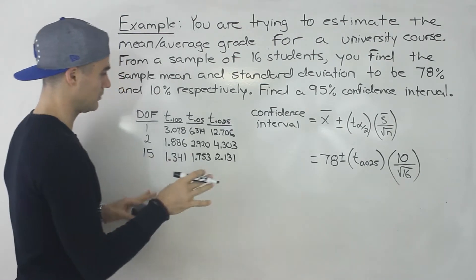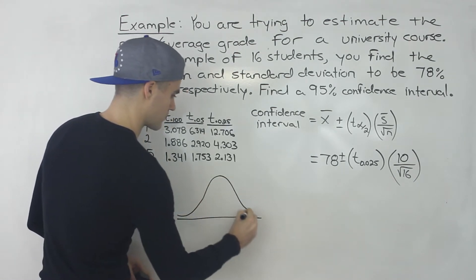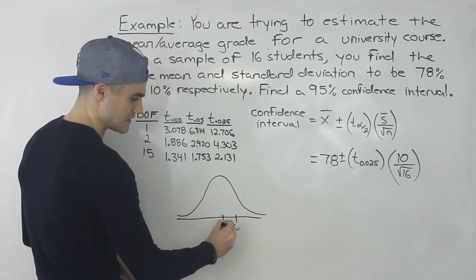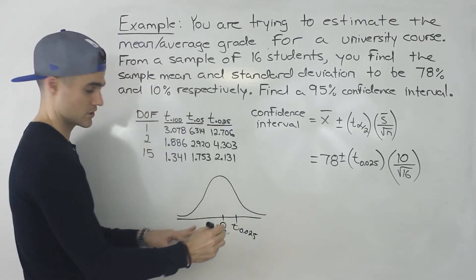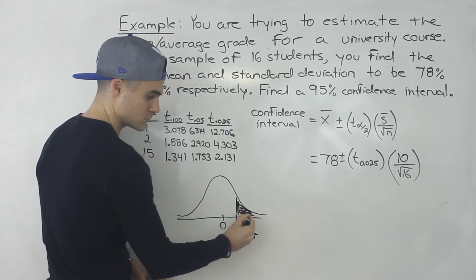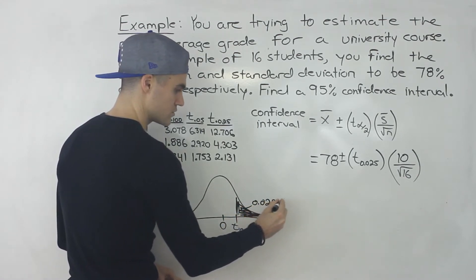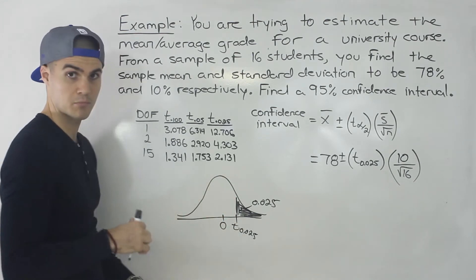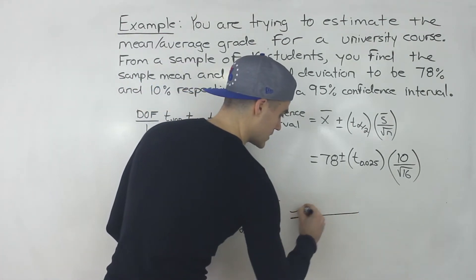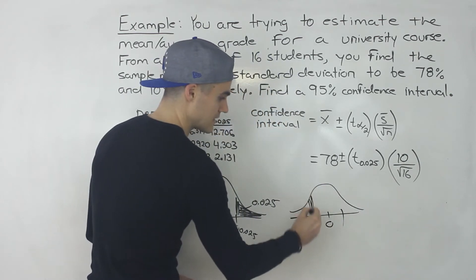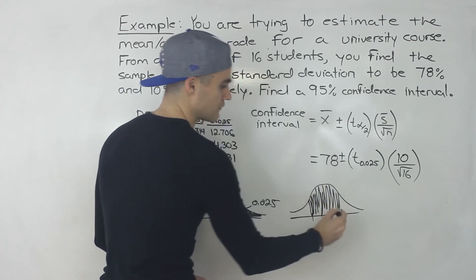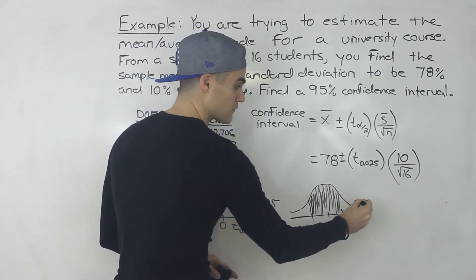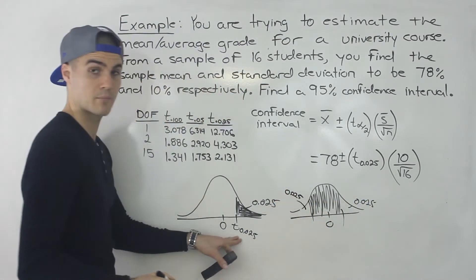So, very similar to the z-table with a couple of differences. What does t-0.025 even mean? It basically means the t-value where the area under the curve to the right of the distribution is 0.025. And so the area to the left of that t-value is 0.975. That makes sense because centered at 0, the middle has to be 95% since we're finding a 95% confidence interval. The areas outside total 0.05, split evenly to give 0.025 on each side.